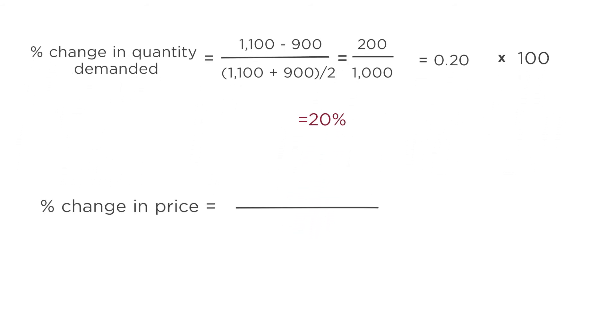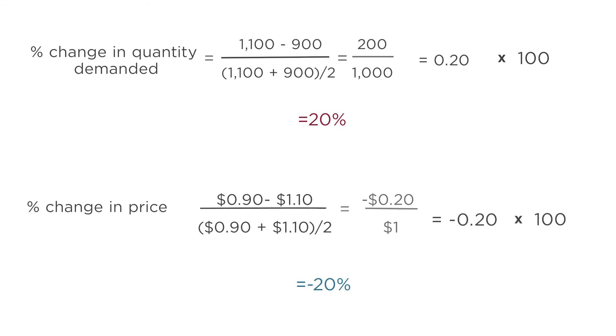Now for price. The change in price is $0.90 minus $1.10, or negative $0.20. The average price is $0.90 plus $1.10 divided by 2, or $1. Negative $0.20 divided by $1 is negative 0.2, or negative 20%.